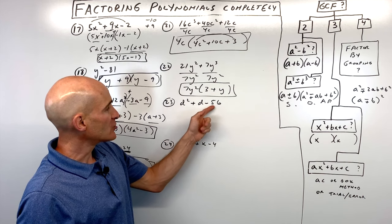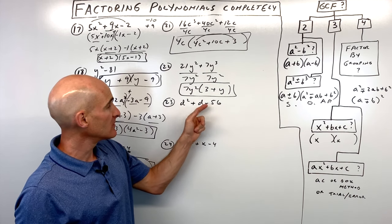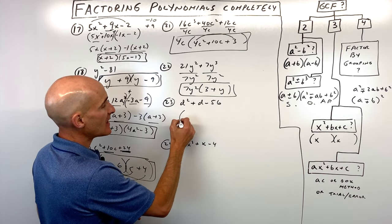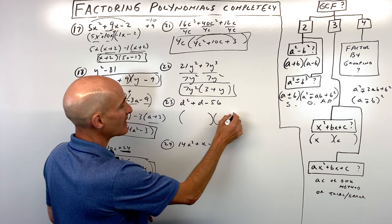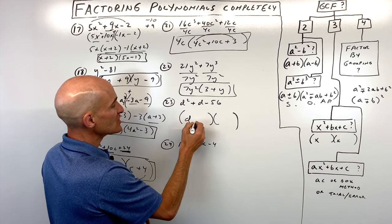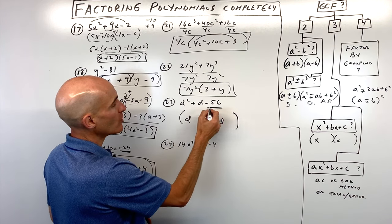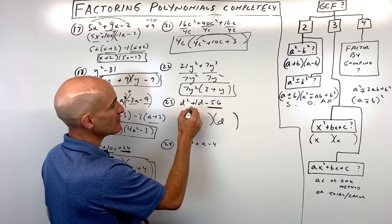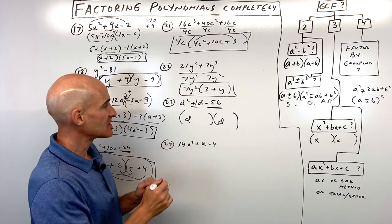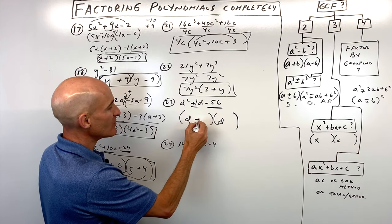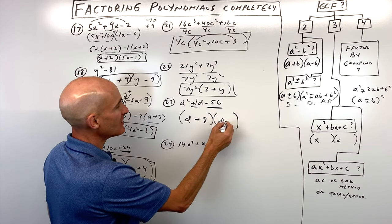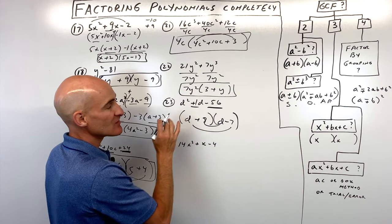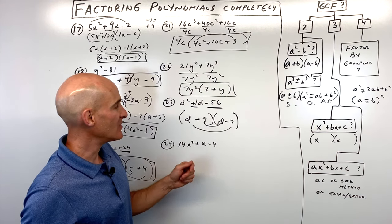Number twenty-three is a trinomial with leading coefficient 1 and no greatest common factor. What two numbers multiply to negative 56 but add to 1? That's positive 8 and negative 7. So we get d plus 8 times d minus 7 — 8d minus 7d gives you 1d.